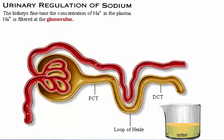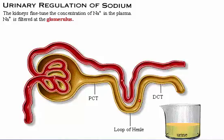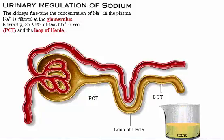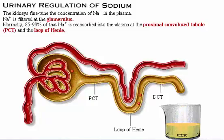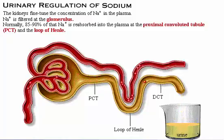Sodium is filtered at the glomerulus. The higher the glomerular filtration rate, the more sodium is filtered out of the plasma. Normally, 85-90% of that sodium is reabsorbed into the plasma at the proximal convoluted tubule and loop of Henle.